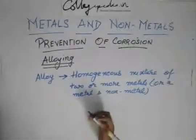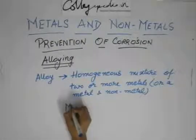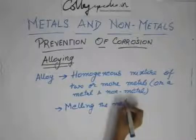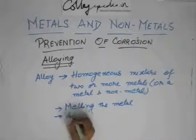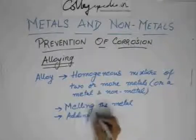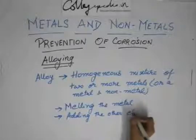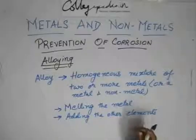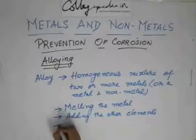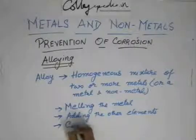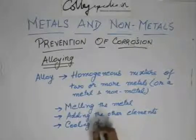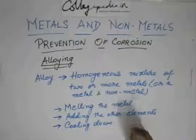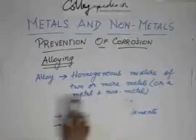How is an alloy made? It is made by first melting the metal, then adding the other elements in a fixed proportion — you cannot add any arbitrary amount of the other element. Then you cool down the mixture. You just melt the metal, add the required substances, and then cool down.